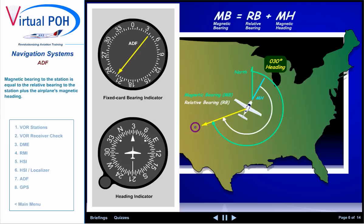Magnetic bearing to the station is equal to the relative bearing to the station plus the airplane's magnetic heading. If the sum is greater than 360 degrees, subtract 360 degrees to obtain the magnetic bearing to the station.